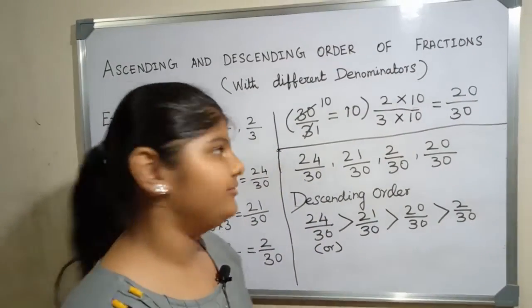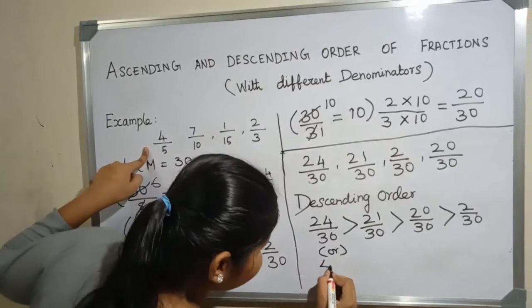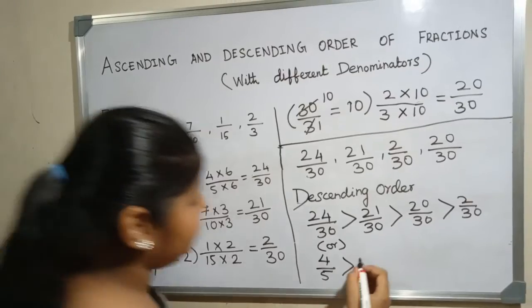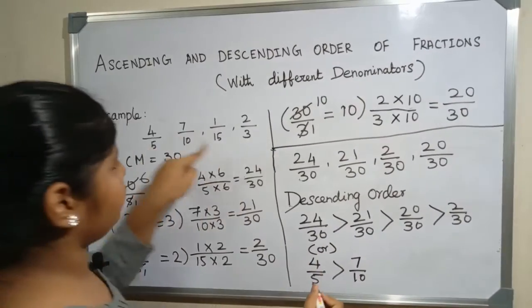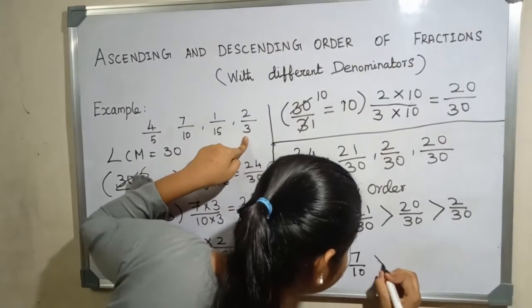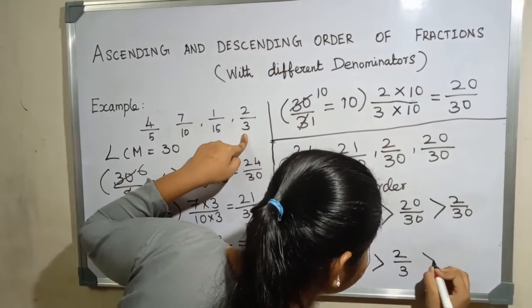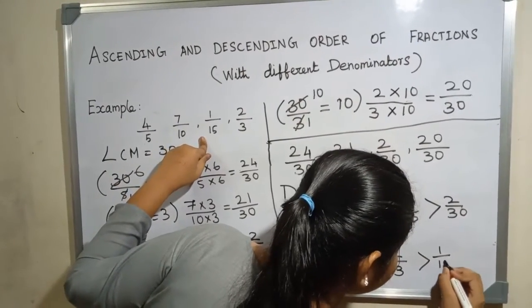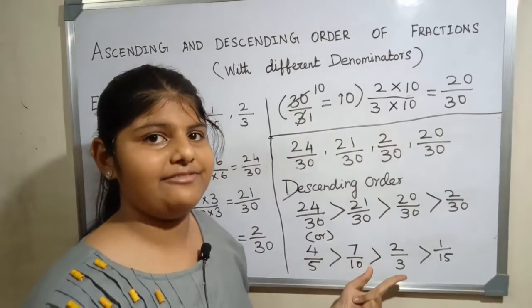Descending order of given fraction is 4 by 5, 7 by 10, 2 by 3, and 1 by 15. This is the descending order of the given fraction.